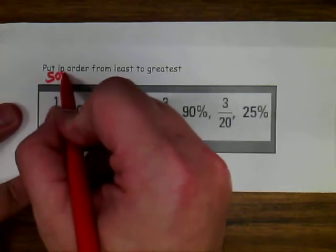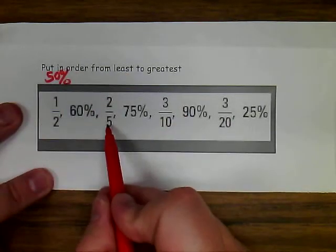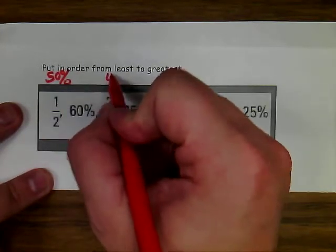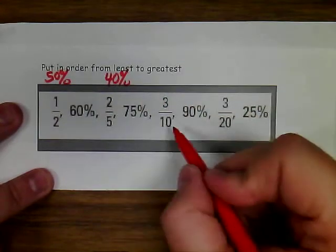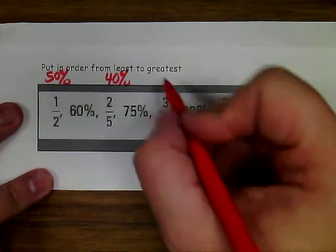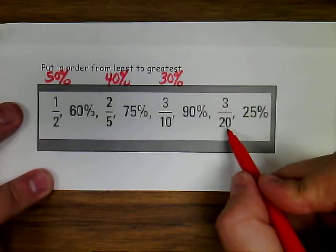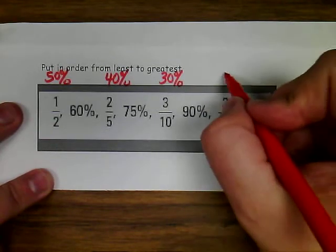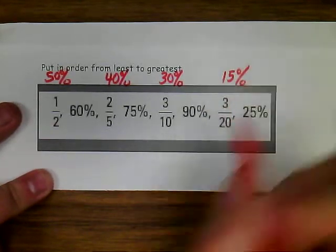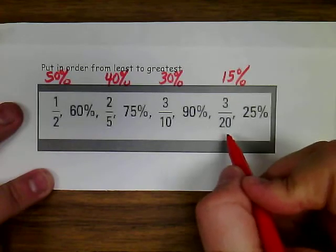just from standard procedures, I know one-half is 50%. For here, we would multiply 5 times 20, 2 times 20 would be 40%. Here, 10 times 10 is 100, so 3 times 10 would be 30%. And here, 20 times 5 is 100, 3 times 5 is 15%.